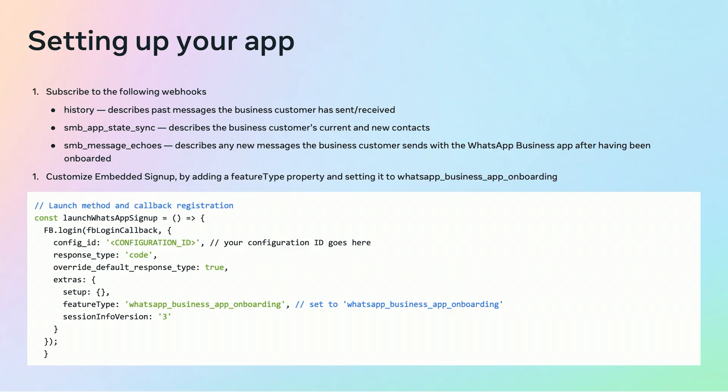Let's get into the how. The following slides assume a working knowledge of Cloud API and will focus on the technical integrations required to enable API solutions for business app users. To implement the onboarding experience previously shown, you will need to update specific settings in both your app and the embedded signup flow. The app should be updated to subscribe to these new webhooks: history, SMB app state sync, and SMB message echoes. The embedded signup should be updated to include the new WhatsApp business app onboarding feature type property.